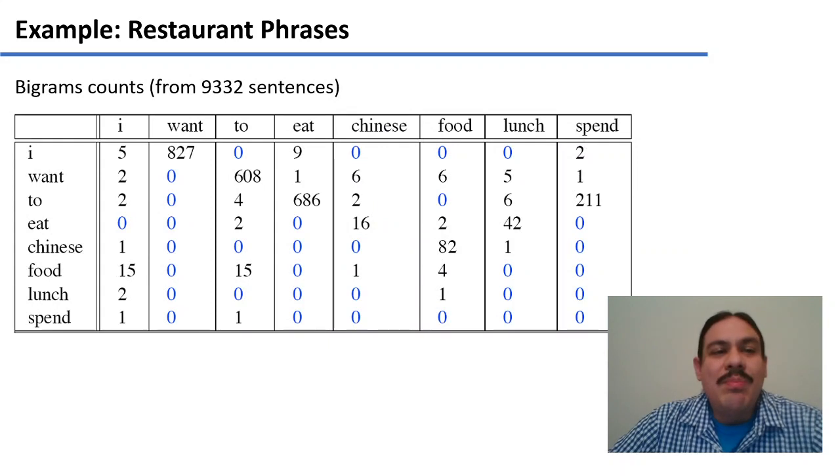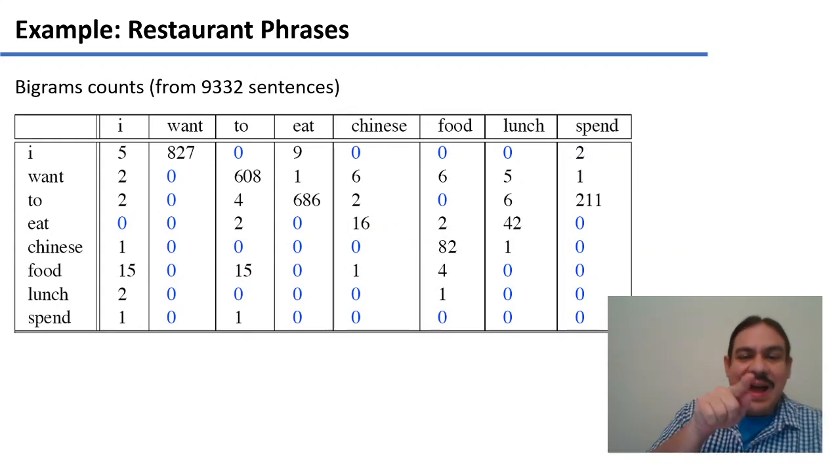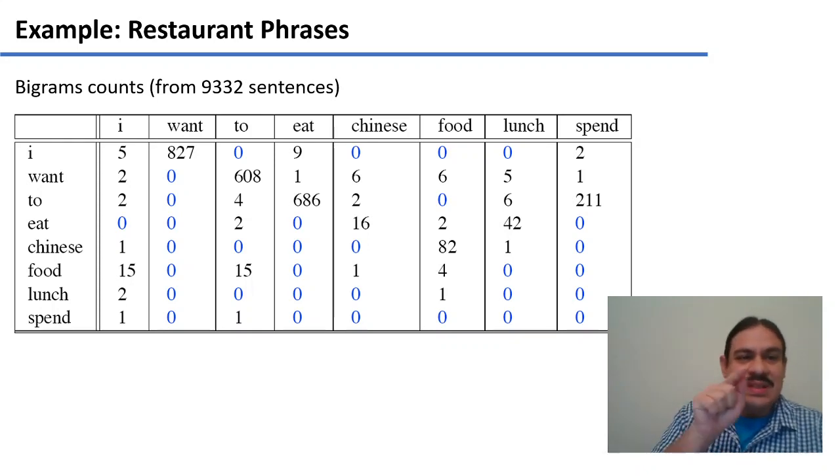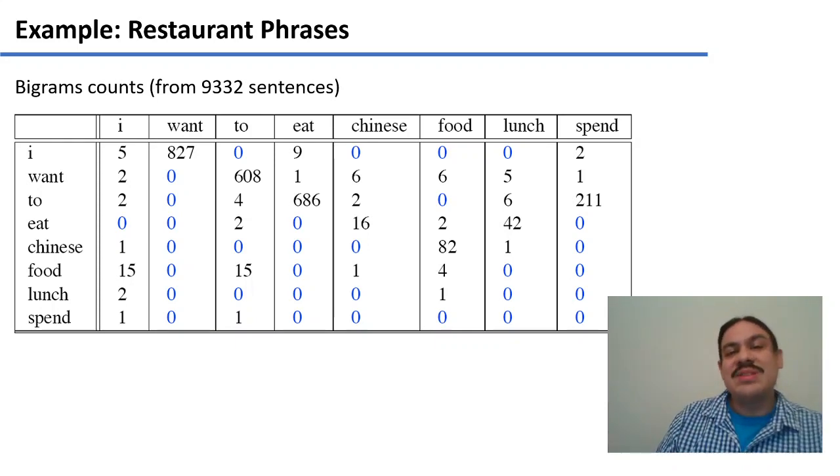Here we have the bigram counts for these words. So for example, we see the sequence I I five times. We see the sequence I want 827 times. We see the sequence I eat nine times. And so on for every combination. We also have sequences that we never see. For example, the sequence I to is observed zero times.